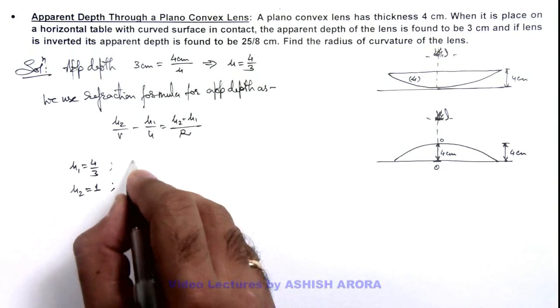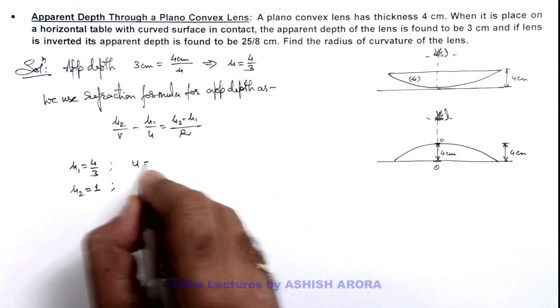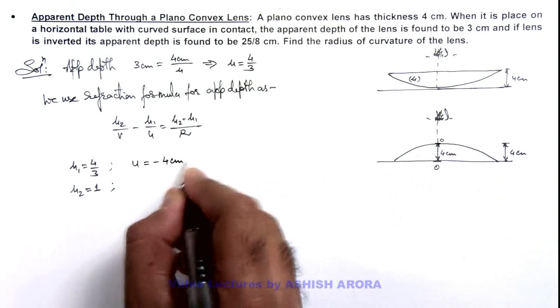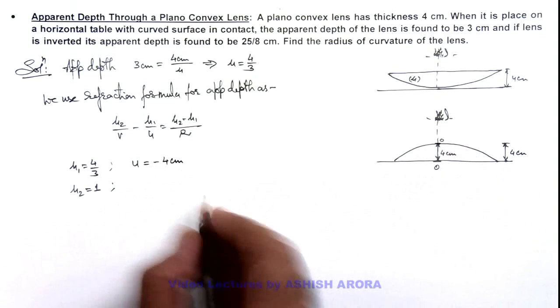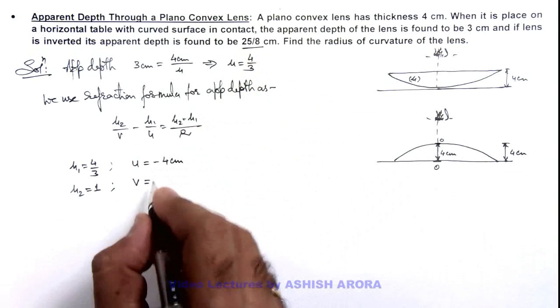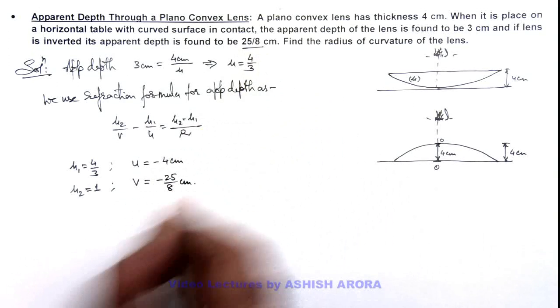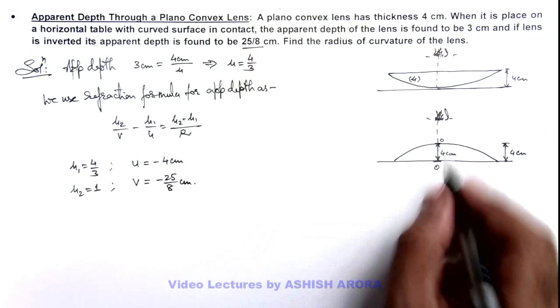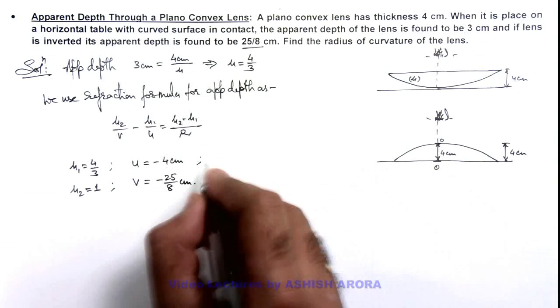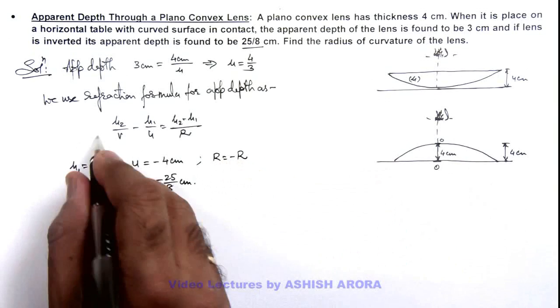u is the object distance with respect to the optic center. It is at a depth of 4 centimeters below, so it can be written as -4 centimeters. The image distance is the apparent depth, which is given as 25/8 centimeters, so we take it as -25/8 centimeters. The radius of curvature, as its center of curvature is below point O, we take as -R, of which we are required to find the value.